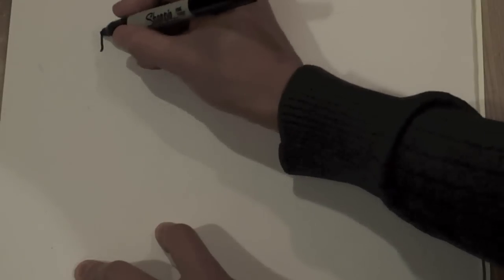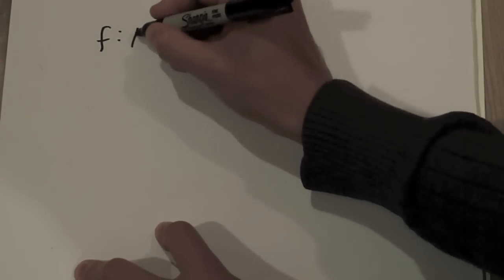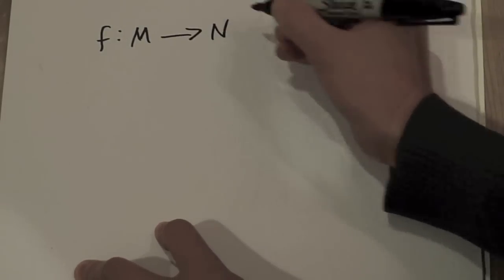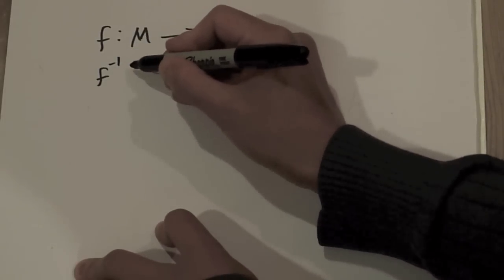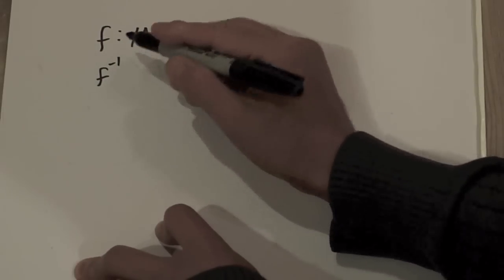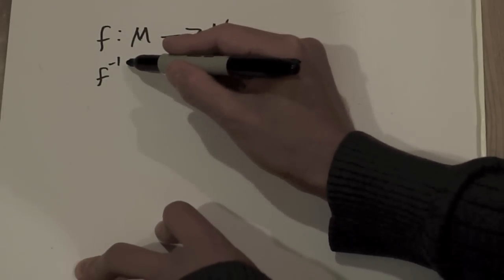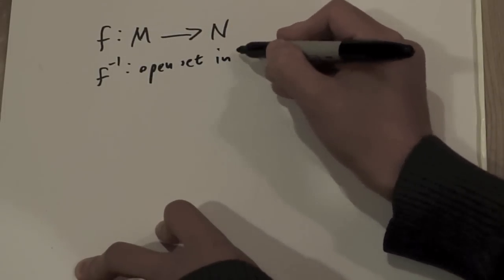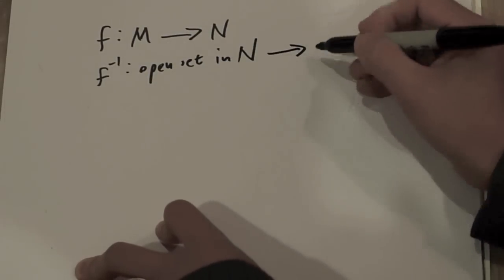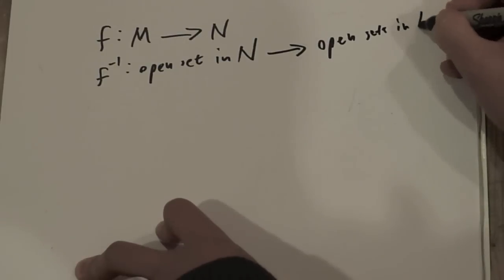So, I mean, it's roughly as follows. Let's go back to the general case. We have a map, F, which takes M into N. Which means that F inverse, even if F is not invertible, the inverse is defined on sets. It'll take open sets in N to open sets in M.